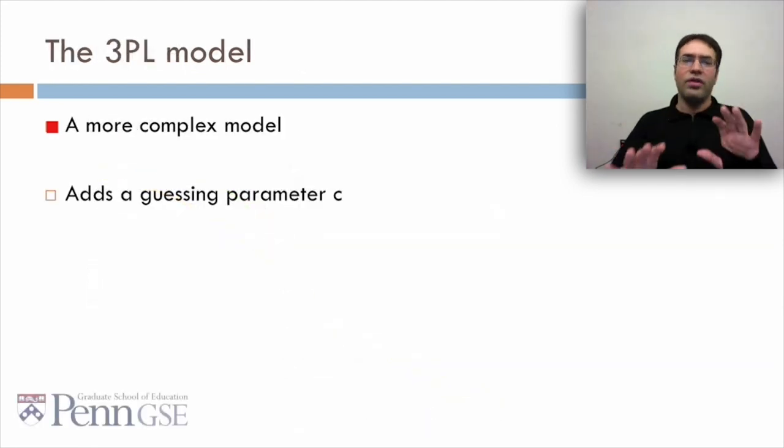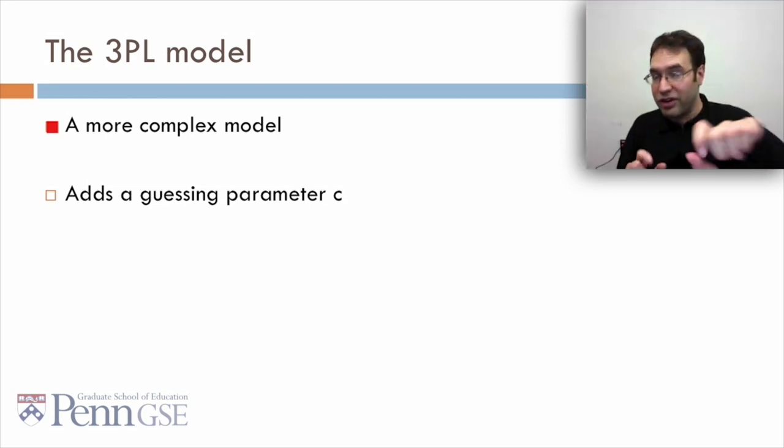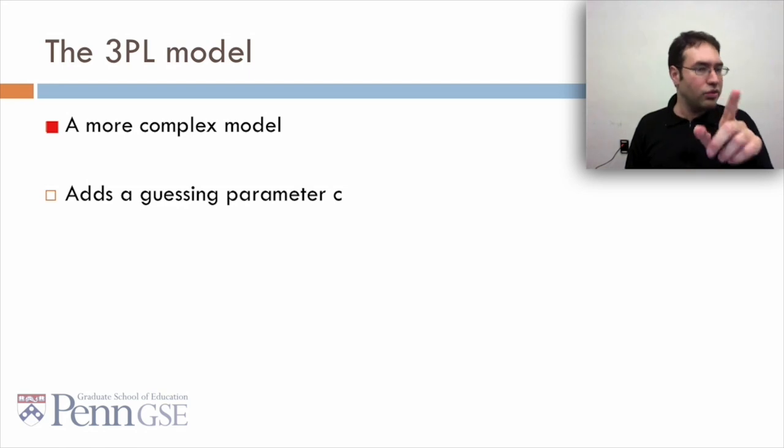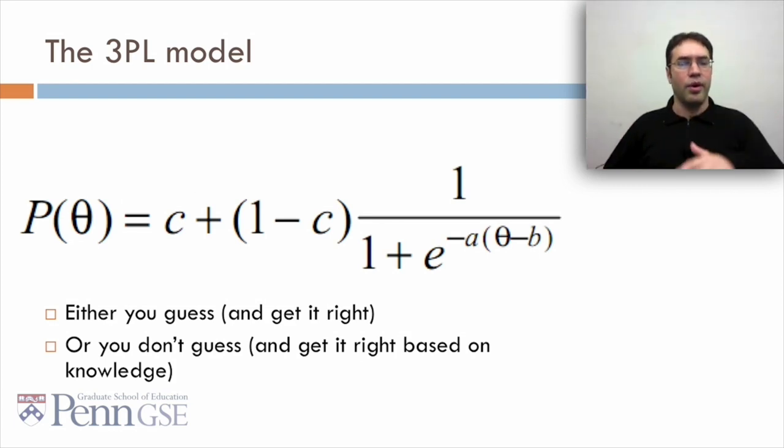Finally, well not finally because there's tons of stuff in IRT, it's a huge area, but finally for today, there's the 3PL model, which is a more complex model which adds a guessing parameter C. And this might look kind of familiar if you remember BKT. The probability you get things right is the probability you guess it plus the probability you didn't guess it times the probability you knew it. So either you guess and you just get it right, or you don't guess and then you get it right based on knowledge.